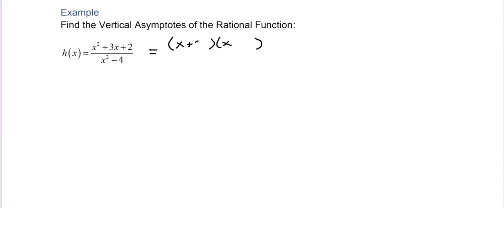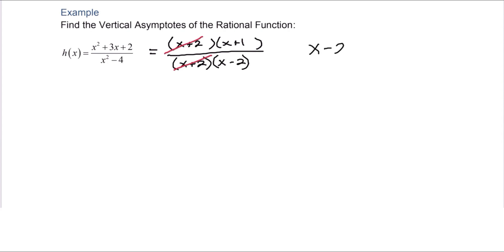To find the vertical asymptotes of this rational function, we first factor the top and the bottom. In the numerator we get x plus 2 and x plus 1. In the denominator, we factor the difference of squares as x plus 2 and x minus 2. Recognizing that x plus 2 appears in both numerator and denominator, those factors cancel. Looking at the remaining denominator, we set it equal to zero and get x equals 2, which is the vertical asymptote.